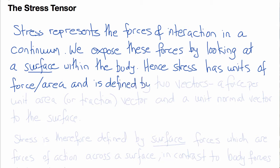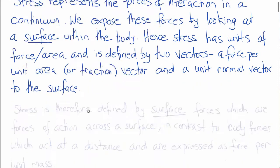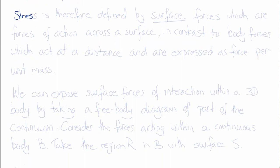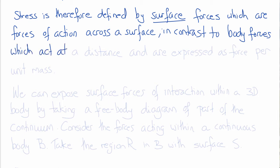Being a tensor — a rank 2 tensor — stress is defined by two vectors. One is the force per unit area vector, or traction vector, and the other is the unit normal vector to the surface that defines its orientation at that point. Stress is therefore defined by surface forces, which are forces of action across a surface, in contrast to body forces which act at a distance and are expressed as force per unit mass. A well-known example of a body force is weight, but there could be others such as those due to a magnetic field.